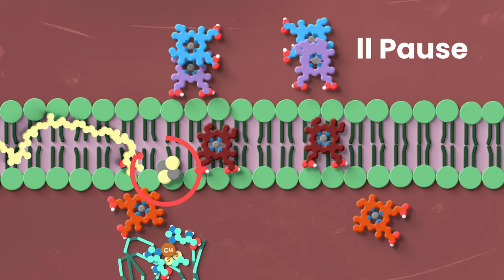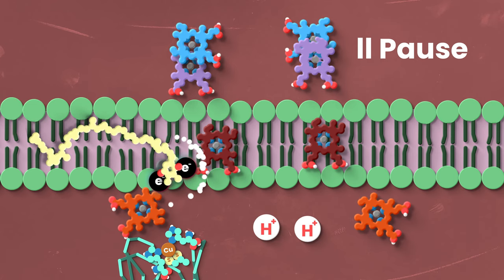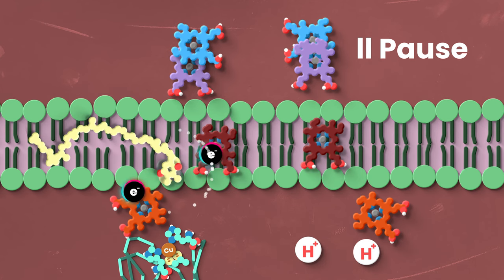So plastoquinone binds right here and immediately loses both of its protons. Because it's binding here, those protons are going to leave and enter the lumen. And so now, instead of just removing those protons from the stroma, we've added them to the lumen. But from this point onward, our electrons are going to bifurcate. They're going to take two separate paths. Half of them are going to move down and attach to a new carrier, plastocyanin, one at a time. The other half are going to move up and become bait to attract more protons. But again, one at a time.